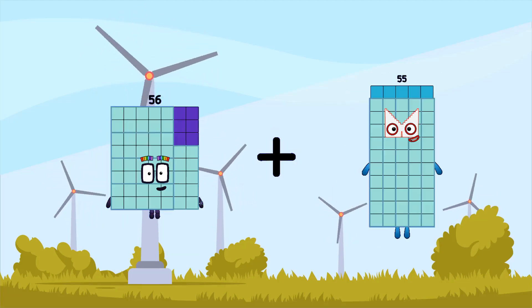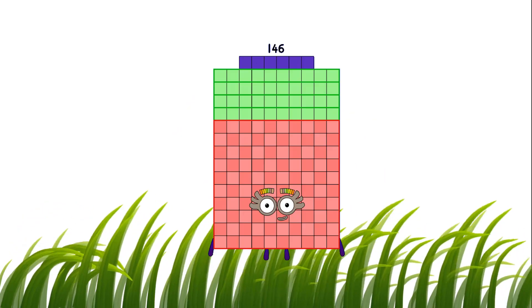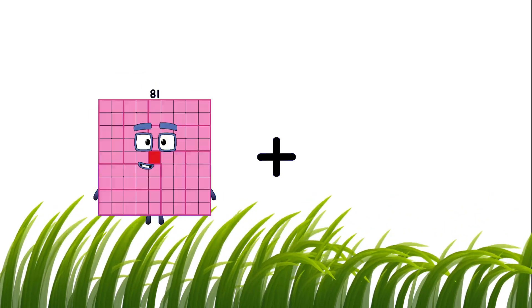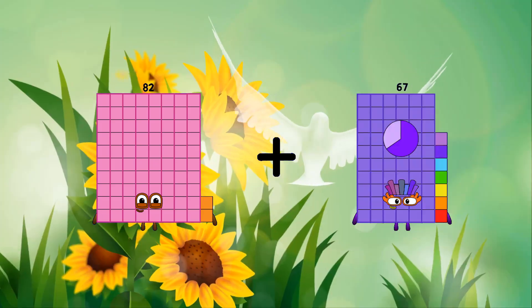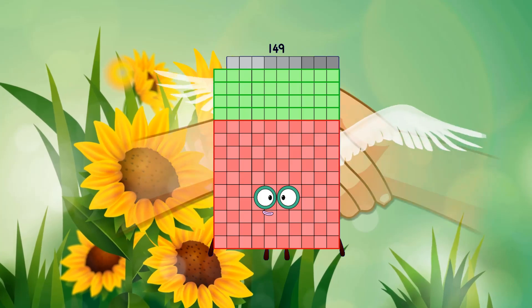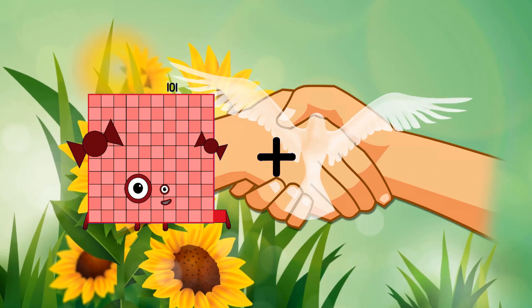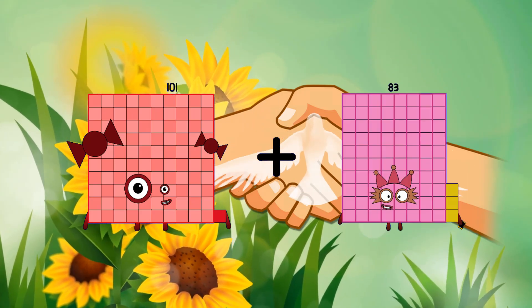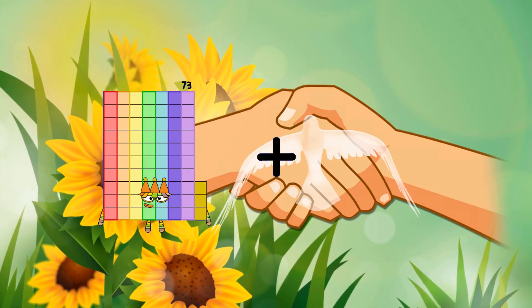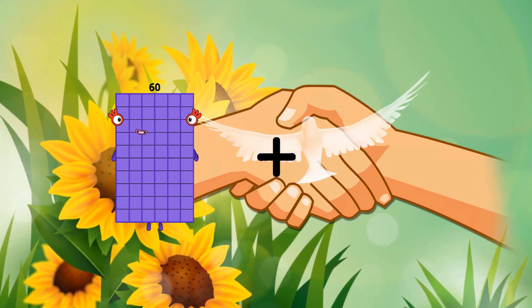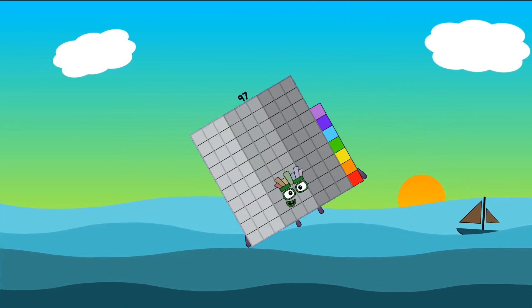56 plus 90 equals 146. 82 plus 67 equals 149. 101 plus 20 equals 121. 60 plus 37 equals 97.